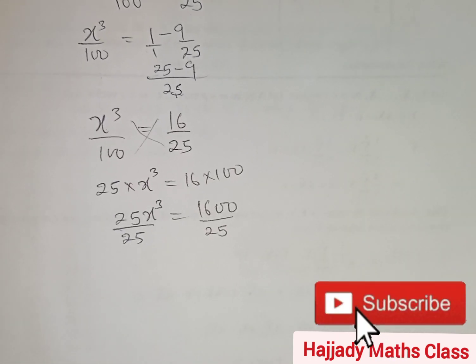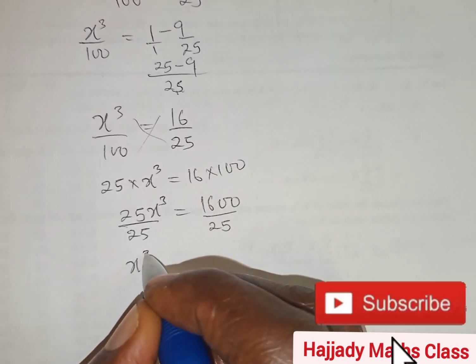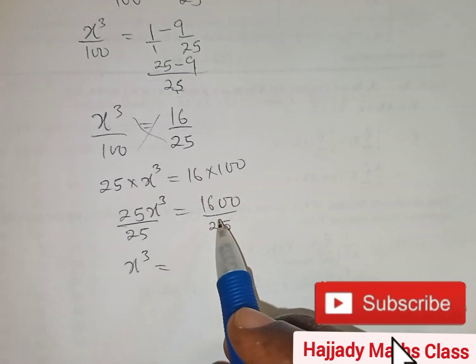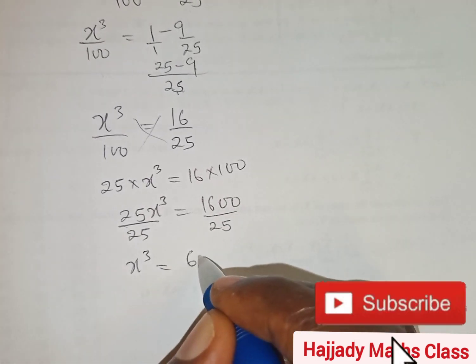So with this, we have that our x cubed equals 1600 over 25 gives 64.